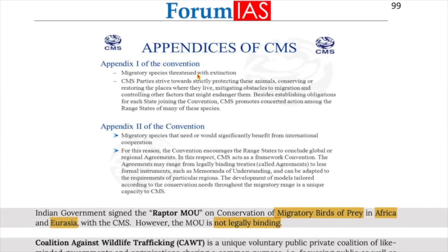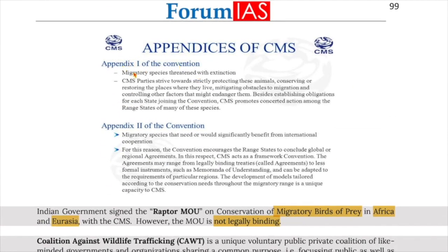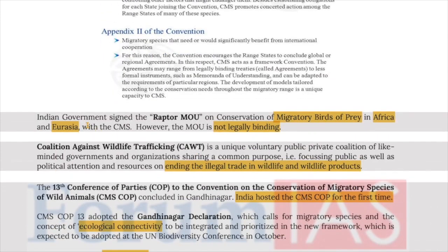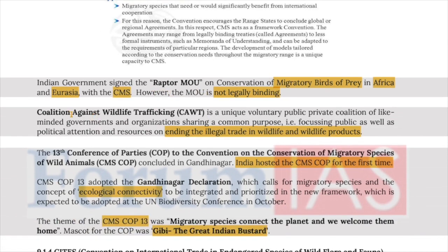Appendix I of CMS relates to migratory species threatened with extinction. Appendix II relates to migratory species that need or would significantly benefit from international cooperation. The Indian government signed the Raptor MOU on conservation of migratory birds of prey in Africa and Eurasia with CMS; however, the MOU is not legally binding. The Coalition Against Wildlife Trafficking (CAWT) is a voluntary public-private coalition focusing public and political attention and resources on ending the illegal trade in wildlife and wildlife products.